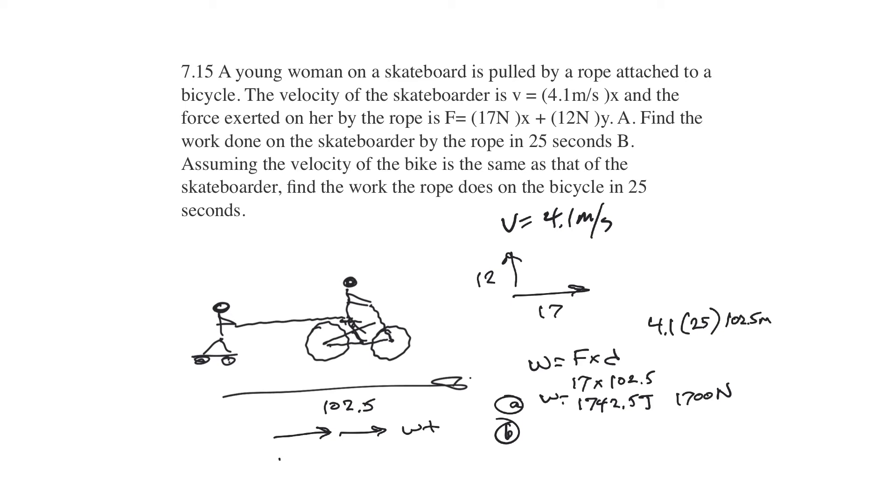If the distance is forward and the force is backwards, then the work is going to be negative. So if the bicycle is pulling her to the right and she is moving towards the right, so the pull is towards the right and the distance is towards the right, then you have a positive work.